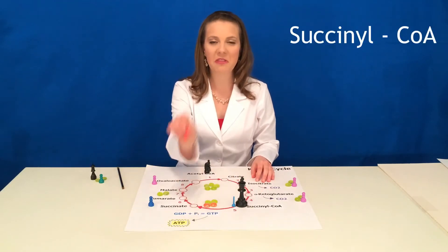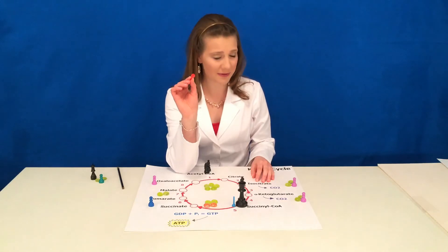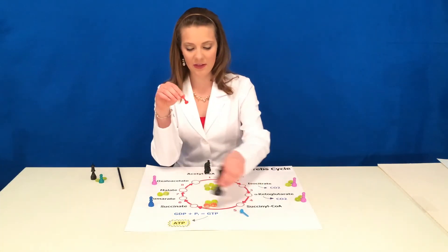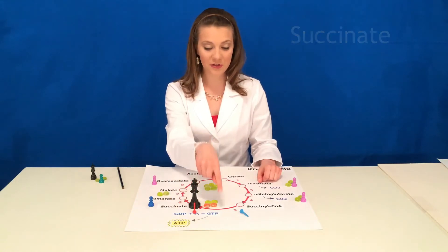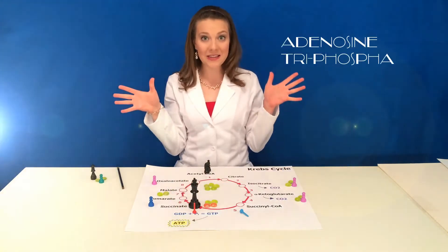But in step five, an energetic and outgoing phosphate is not pleased with this arrangement, so he comes in and knocks the coenzyme A off, forming succinate. Phosphate then bonds to GDP, which makes GTP, which later becomes ATP for the cell.